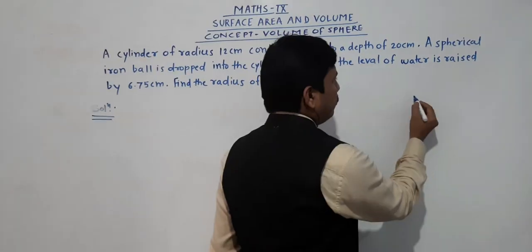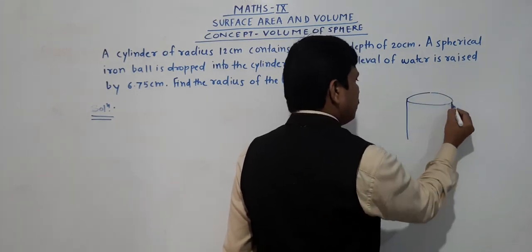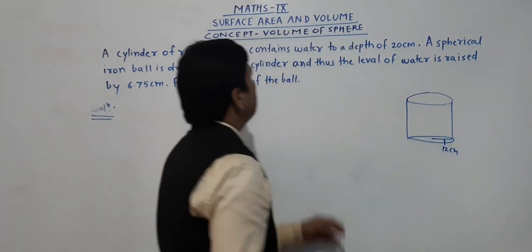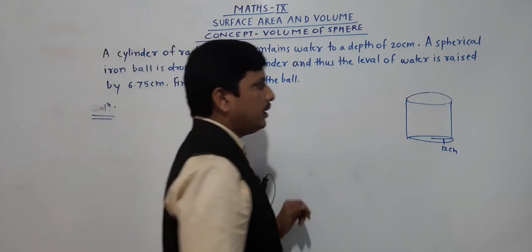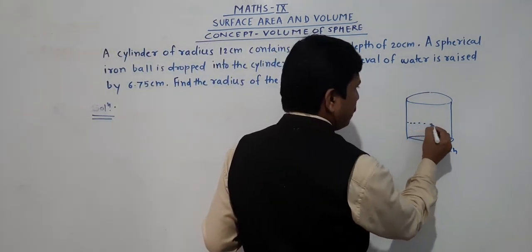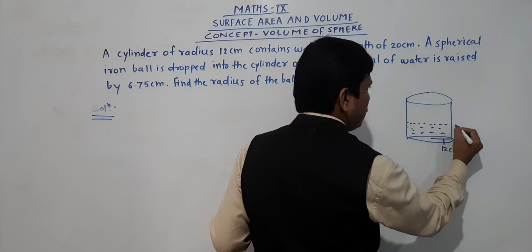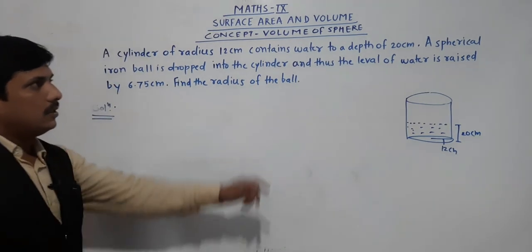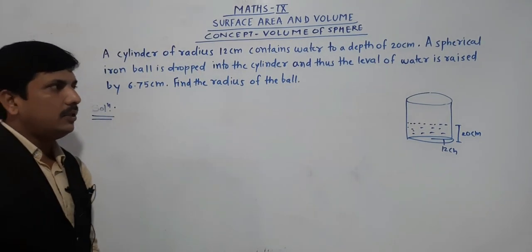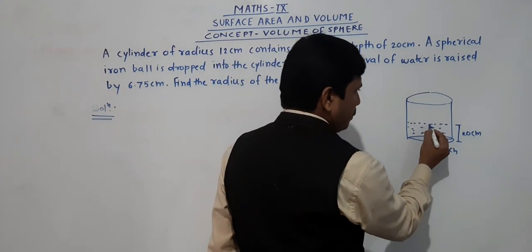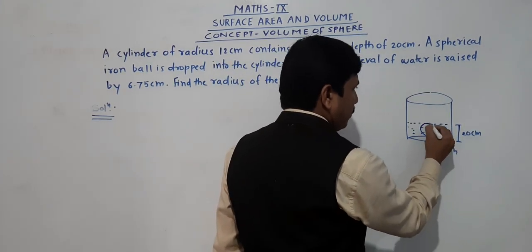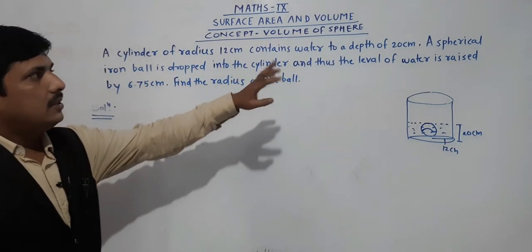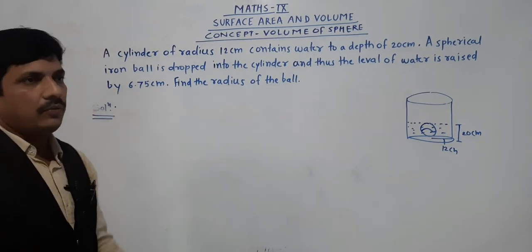Here we have a cylinder whose radius is 12 centimeters. The cylinder contains water to a depth of 20 centimeters, meaning this height is 20 centimeters. Then a spherical iron ball is dropped into the cylinder — suppose this is that ball. When it is dropped, the level of water is raised by 6.75 centimeters.